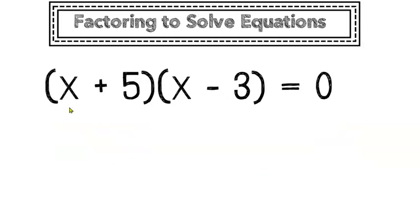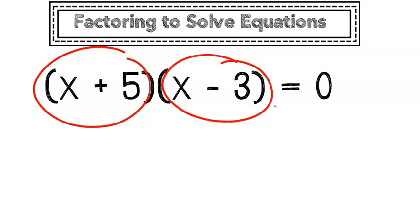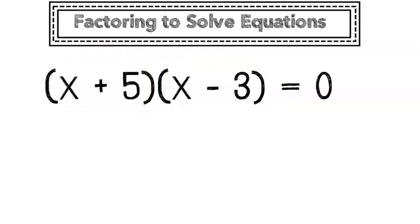What if both of the factors were expressions? Well, the same rule applies. Each factor has the potential to be the 0. So either x plus 5 is equal to 0 or x minus 3 is equal to 0.